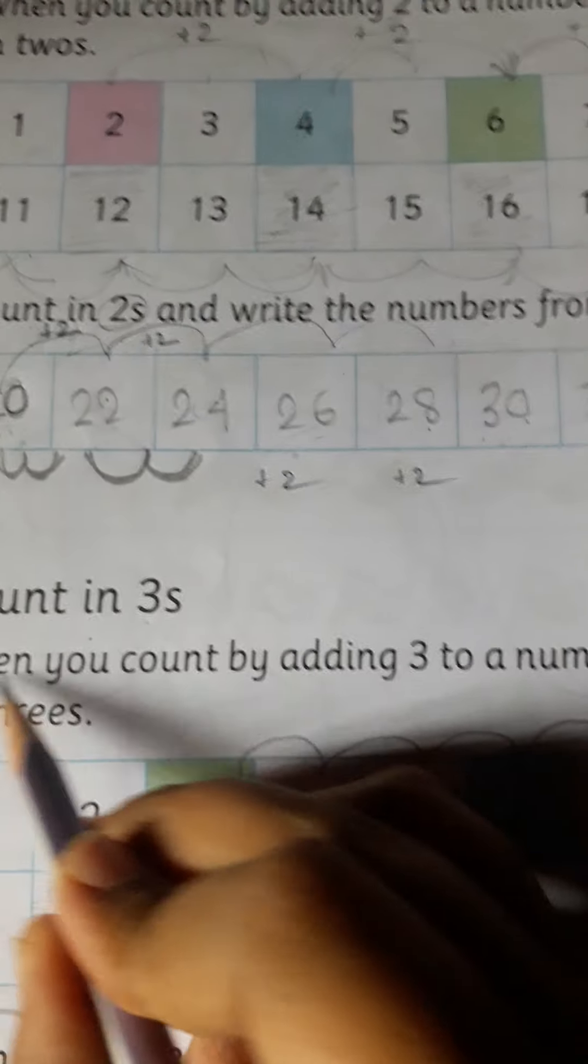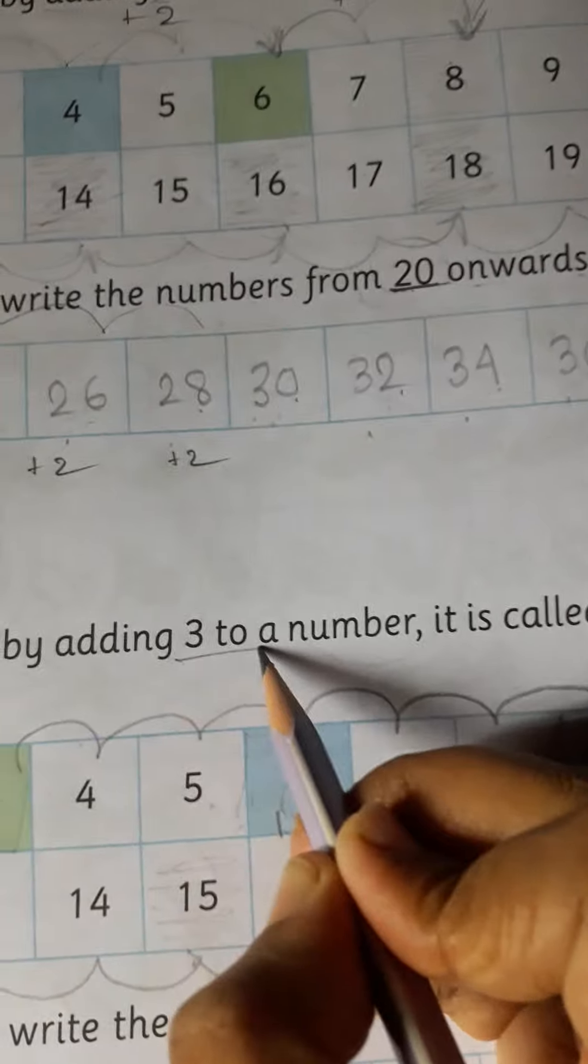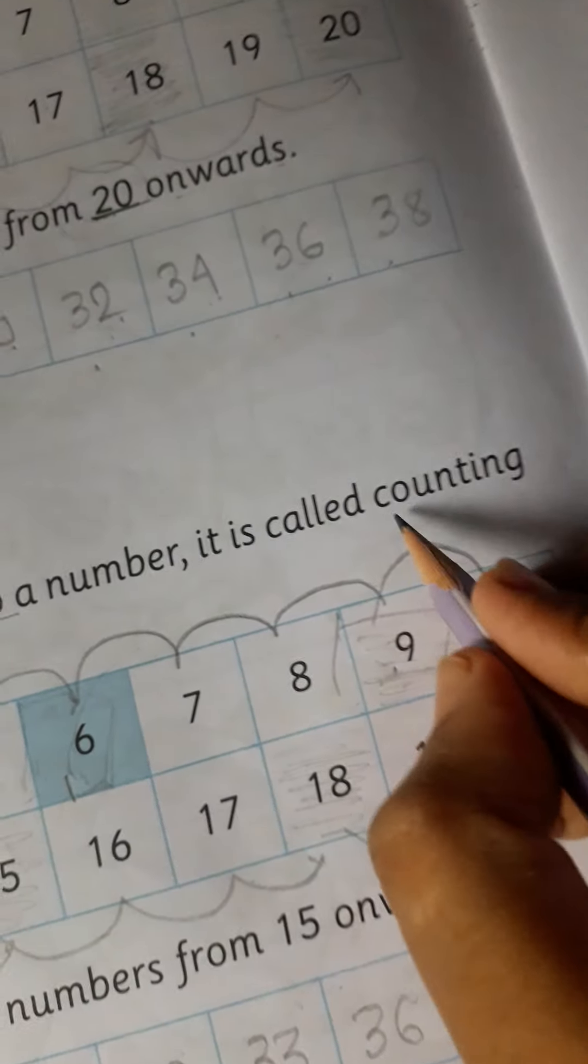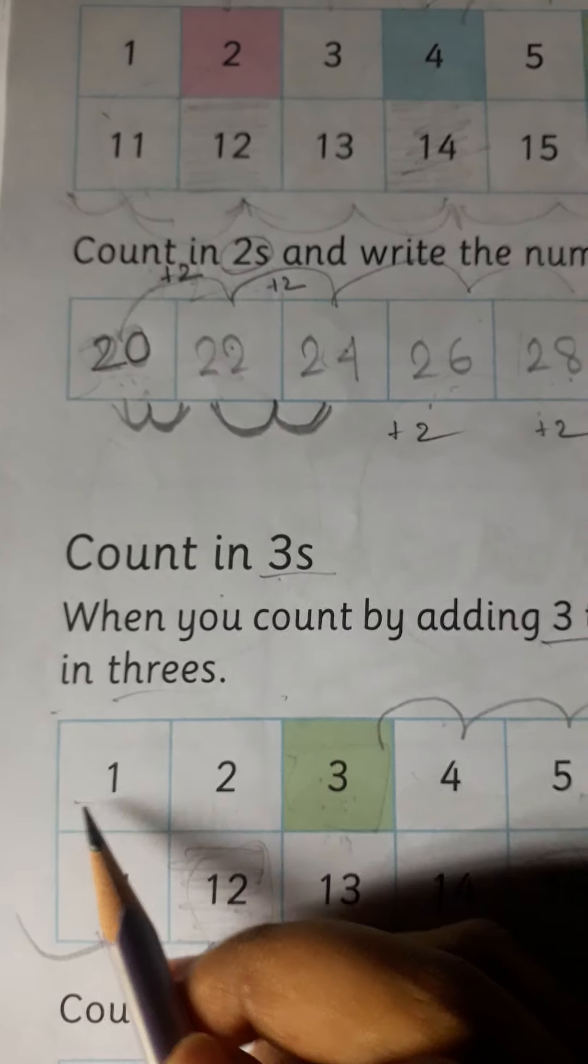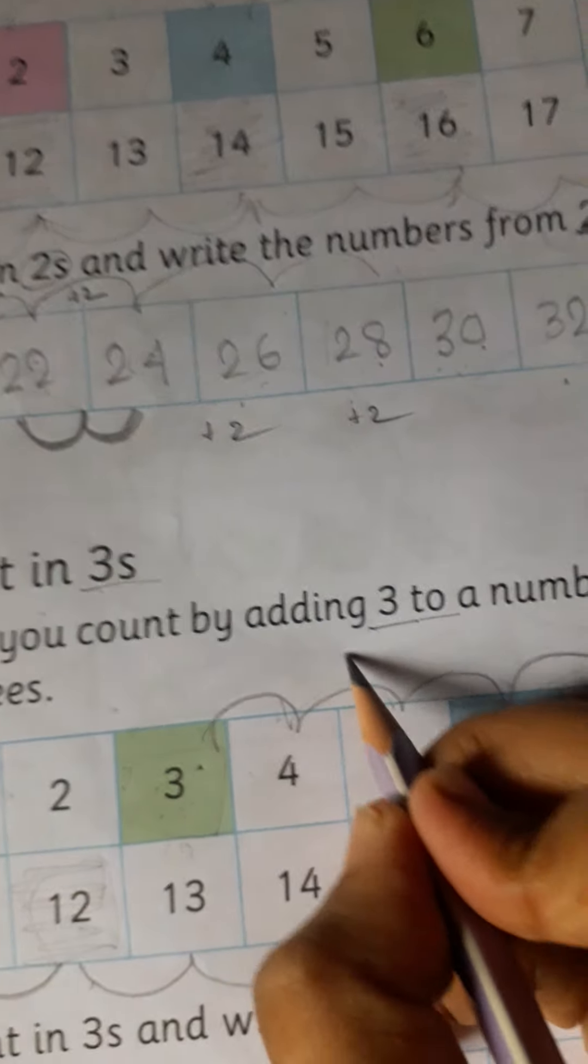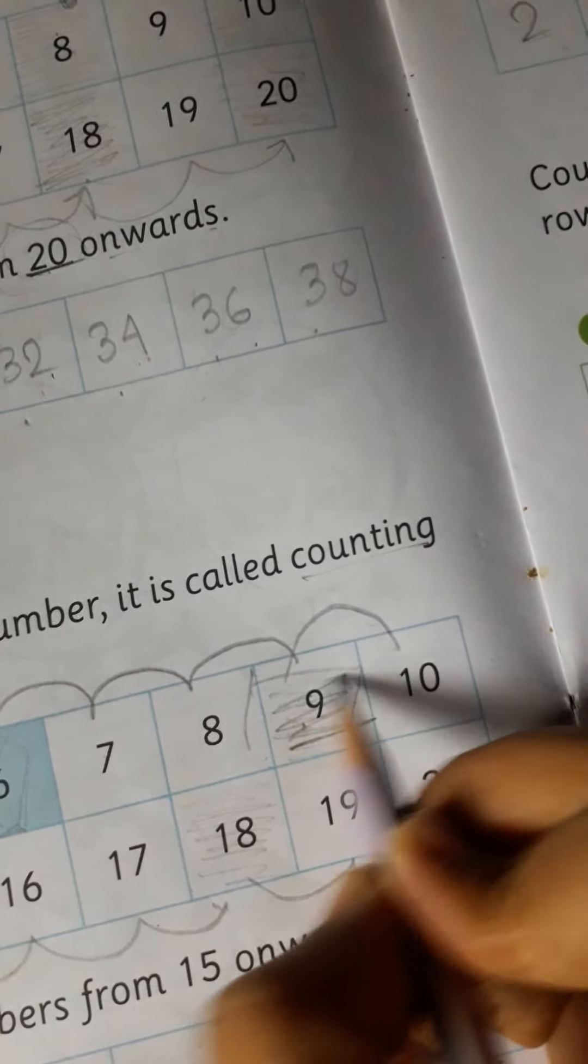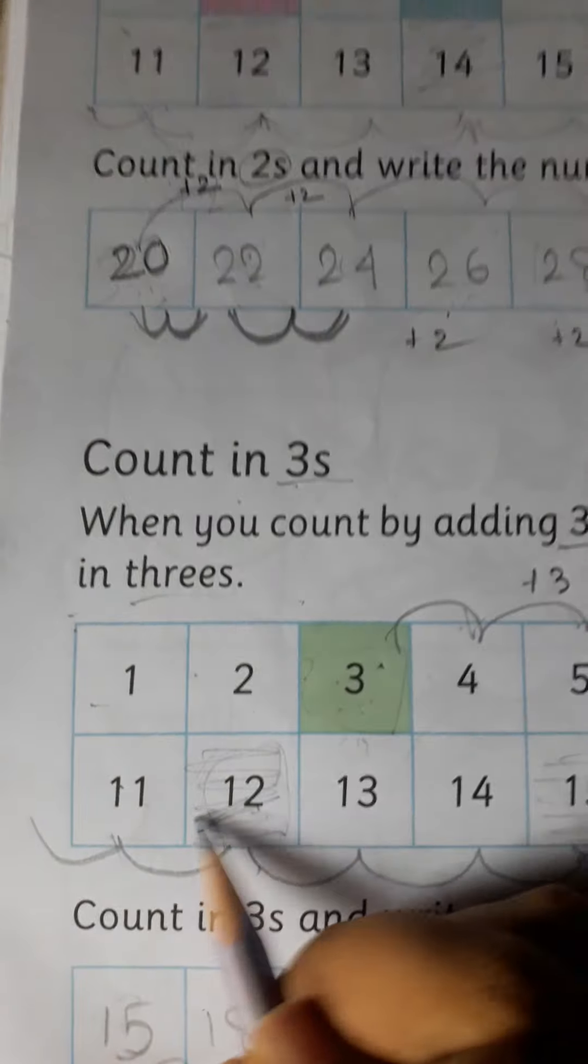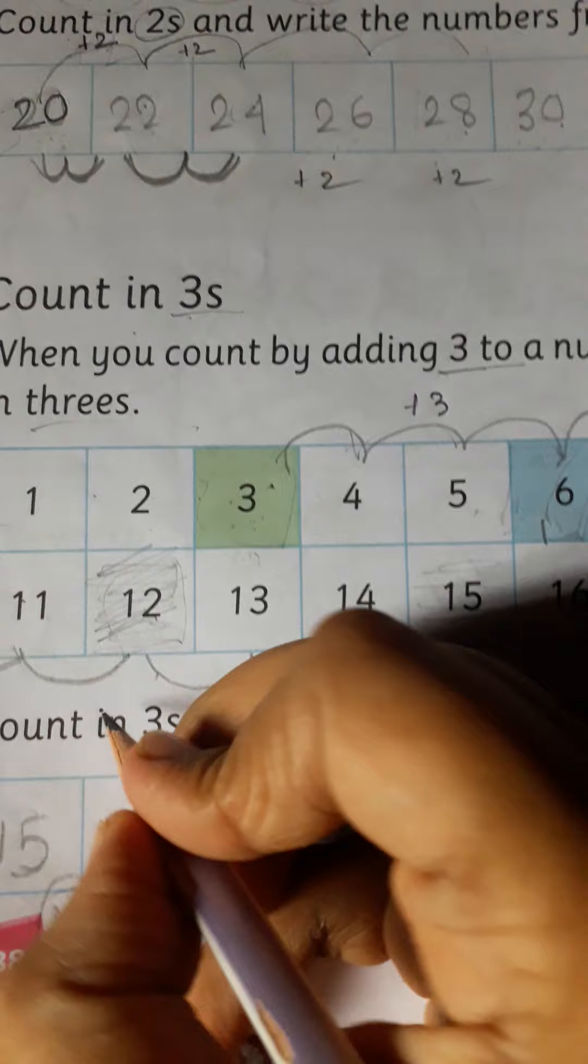Then count in 3s. When you count by adding 3, 3s means 3s add. It's called counting in 3s. 1, 1, 1, 1, 2, 3, then 4, 5, 6, then 4, 5, 6. Then 7, 8, 9, 9 has 3s. Now what we have done? 9, 8, 10, 11, 12, so what we have done? 3s.